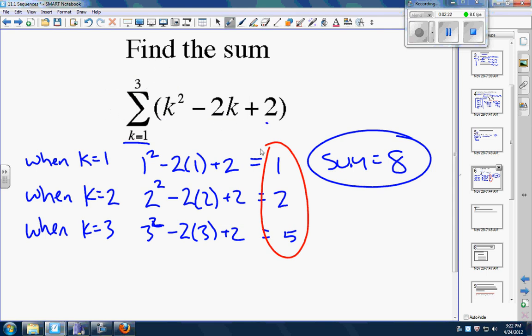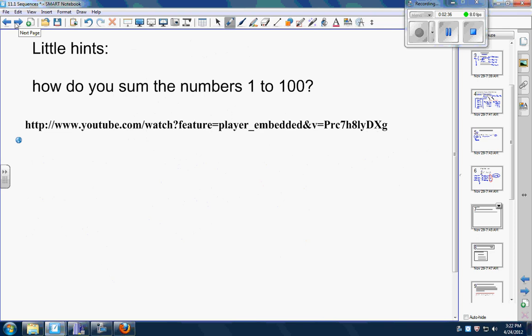The summation notation lets us write one expression for however many we could do. We could easily change this to 30 and you would literally have to do this 30 times and add them all up. This is a famous problem: how do you sum all the numbers 1 to 100, or 1 to 1000, or 1 to 10,000?